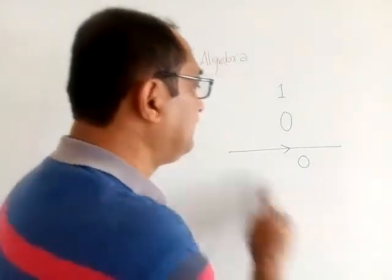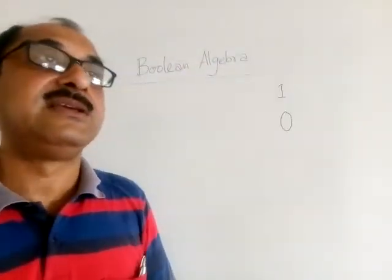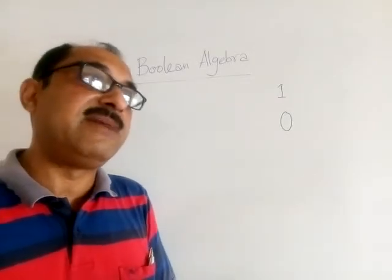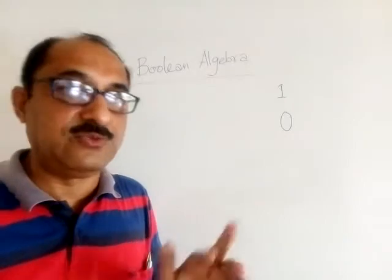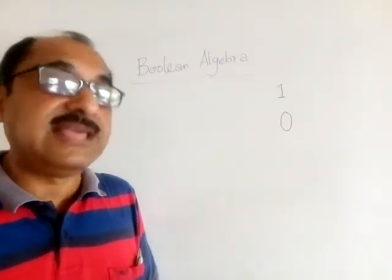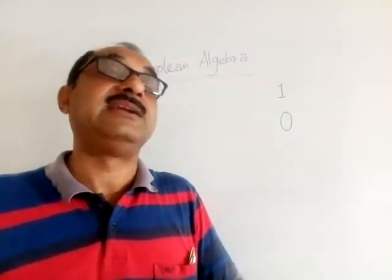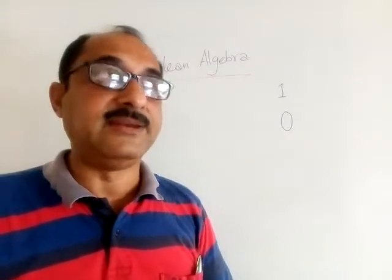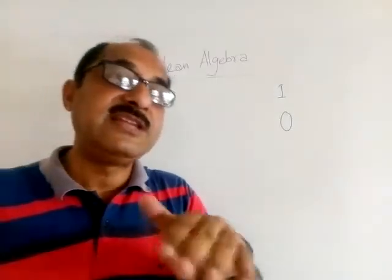So basically it is seen that we need to devise a different kind of mathematical system where only two digits will be used: one and zero. And we have to see various things which happen when a wire carries current and when a wire doesn't carry current. So basically this chapter deals with various behavior of current over a particular wire.